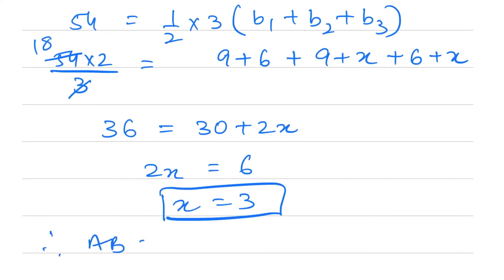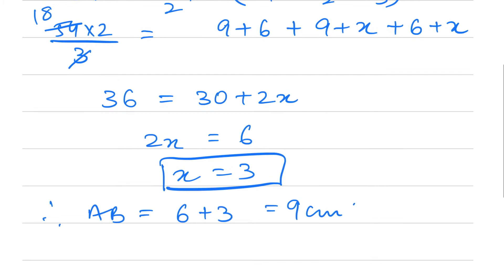Therefore AB = 6 + 3 = 9 centimeters and AC = 9 + 3 = 12 centimeters.